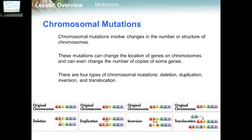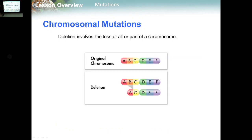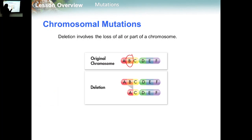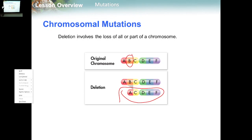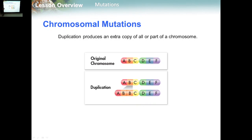Deletion involves the loss of all or part of a chromosome — a specific segment is deleted, which produces a huge effect on the organism.